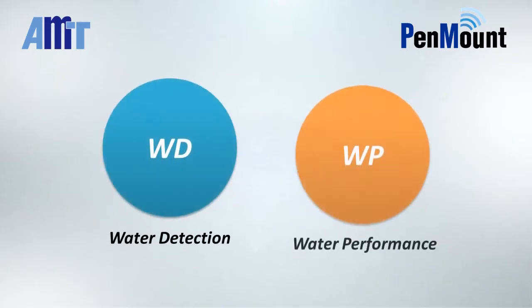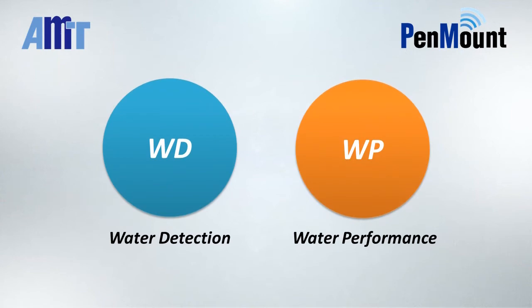AMT provides two types of water handling settings which can be preset on the controller based on customer needs: Water Detection and Water Performance. These two modes work with water, saline, and seawater.